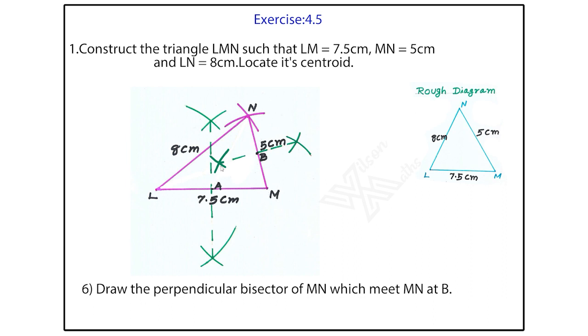With the same measurement you keep the needle at point N. One arc right, one arc left. Join this with dotted line by using scale and pencil. Here, this MN and the perpendicular bisector meet at the point B. That is the sixth step.